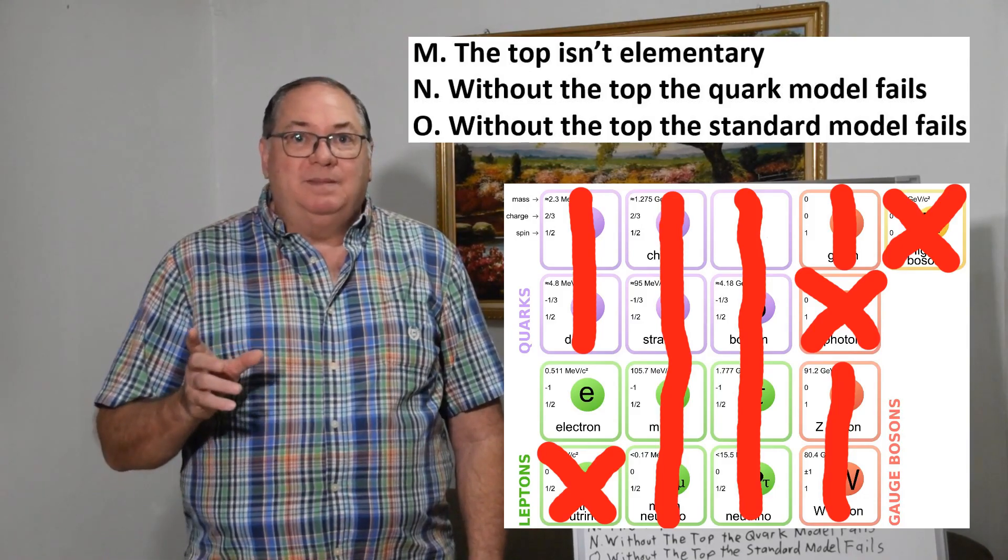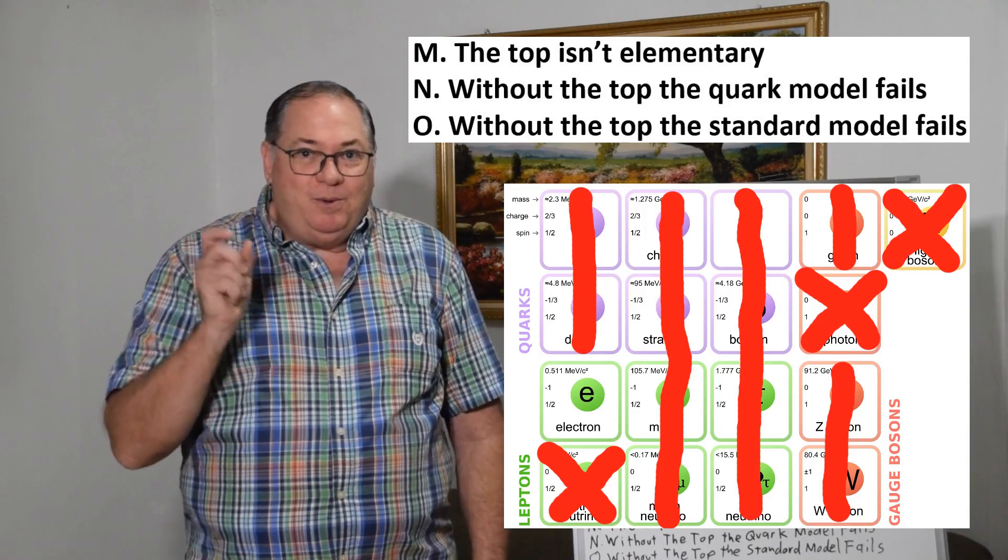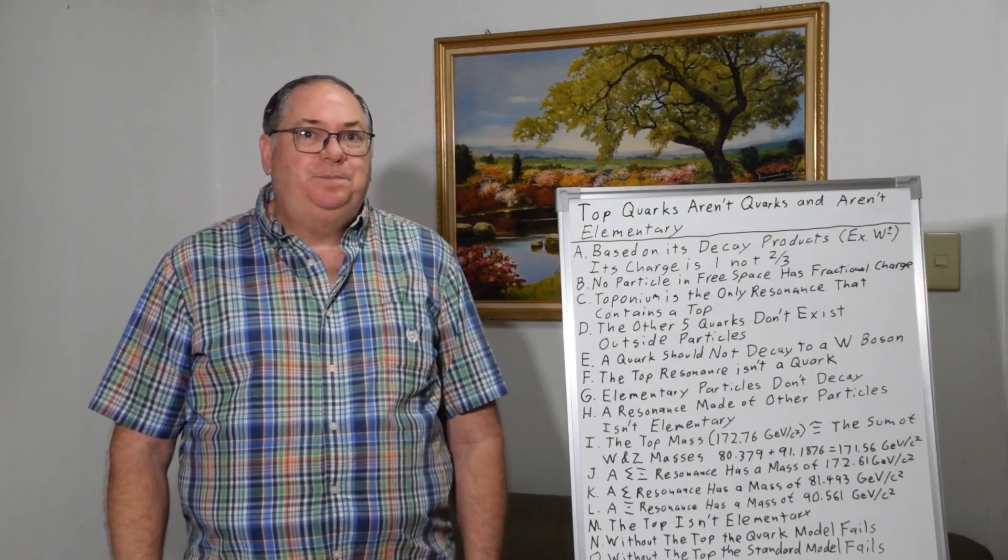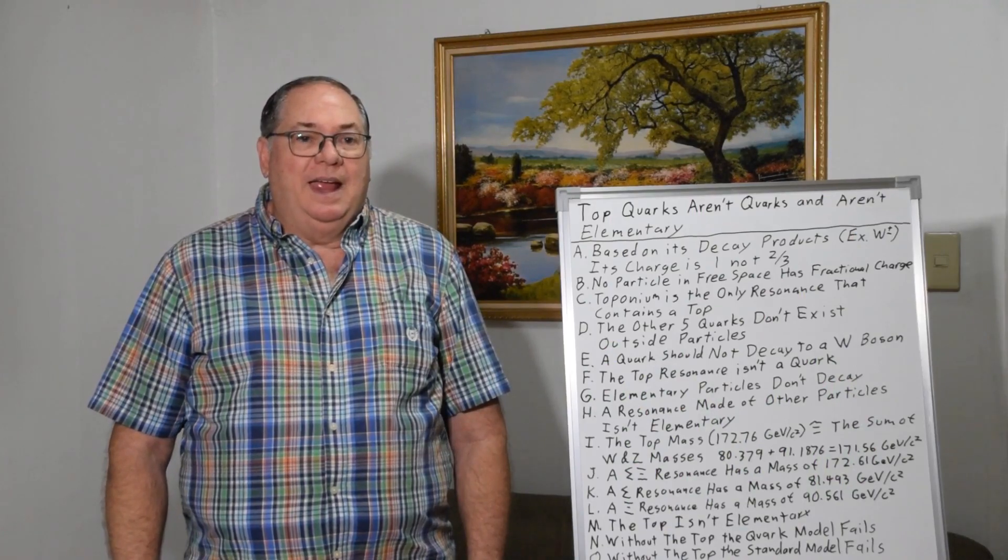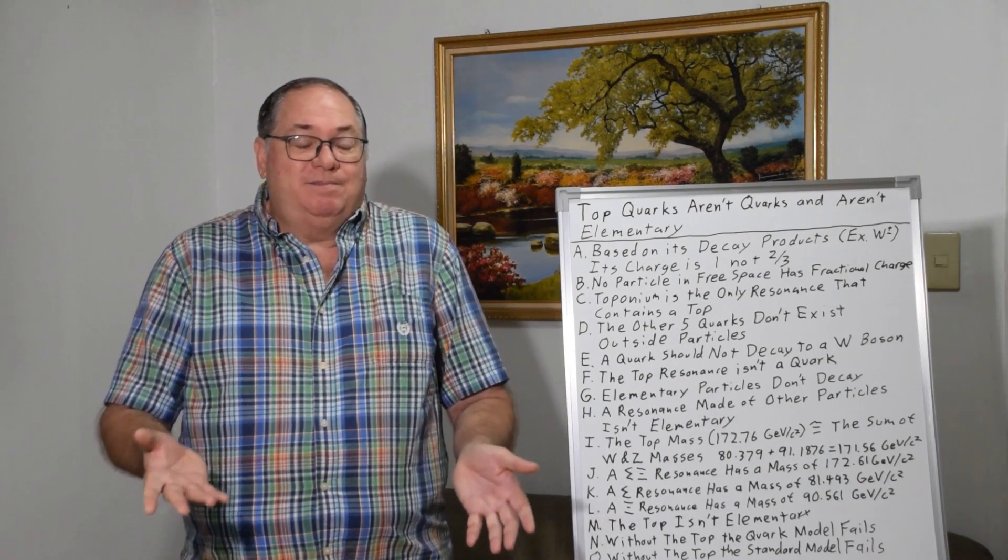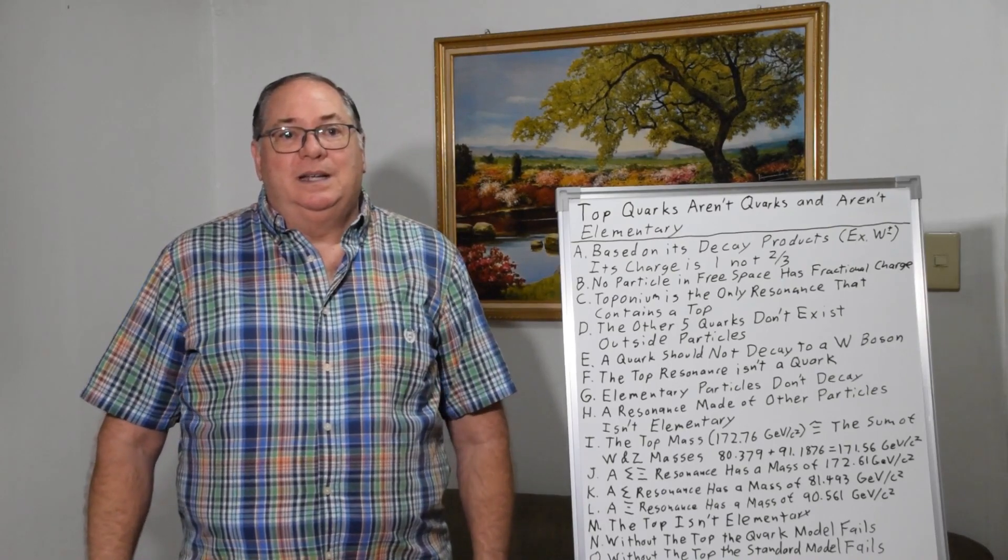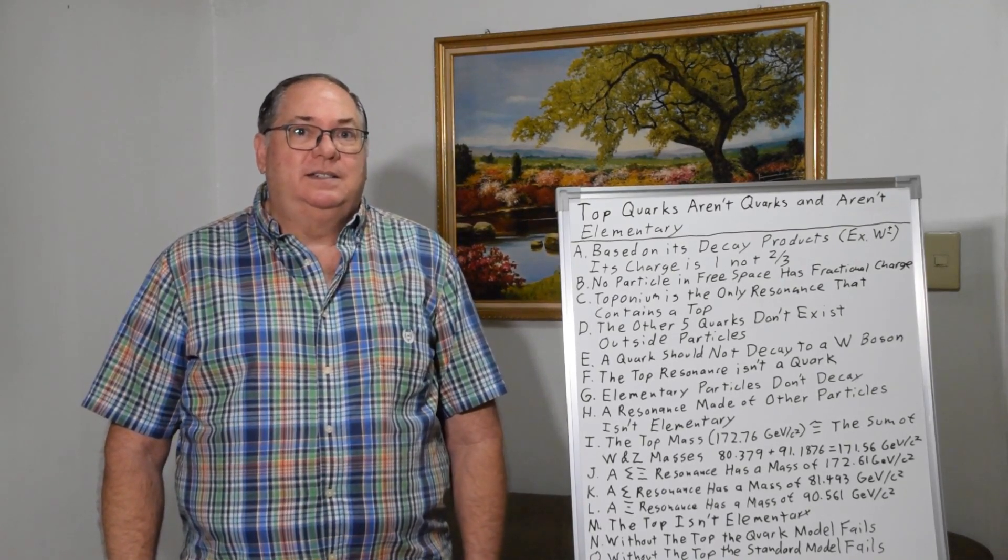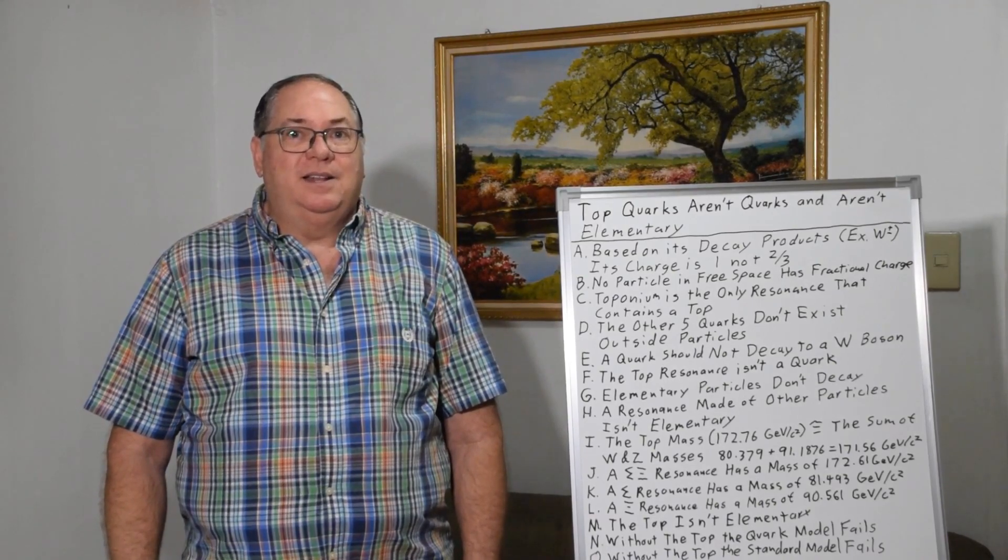So the top, it's like a game of Jenga, you pull one out and the whole thing collapses. And the standard model should collapse because the top resonances are not quarks and are not elementary.